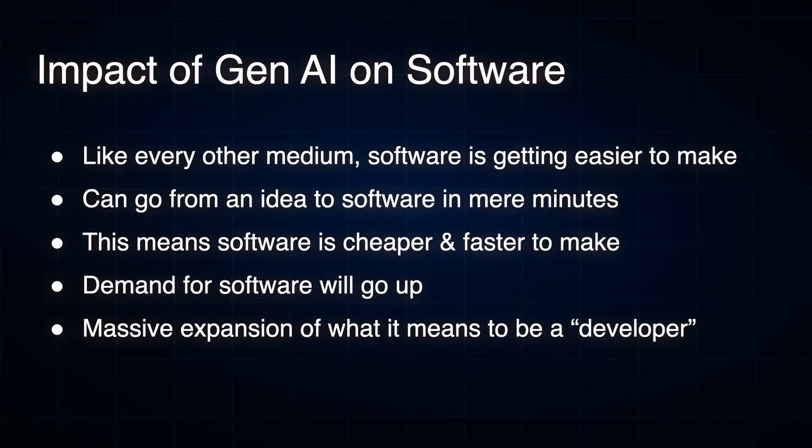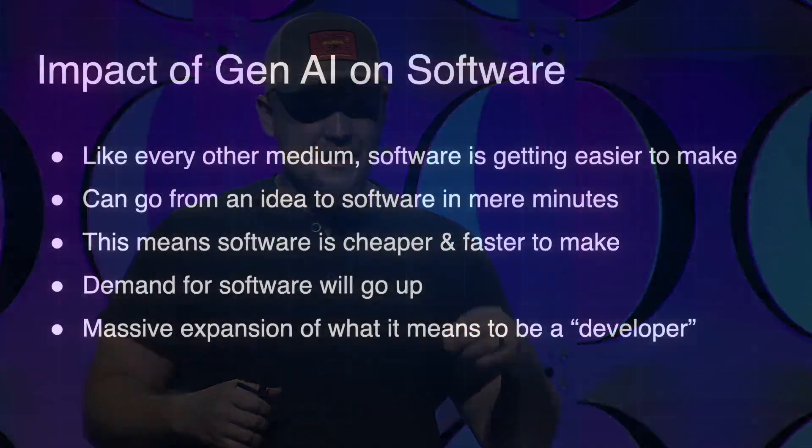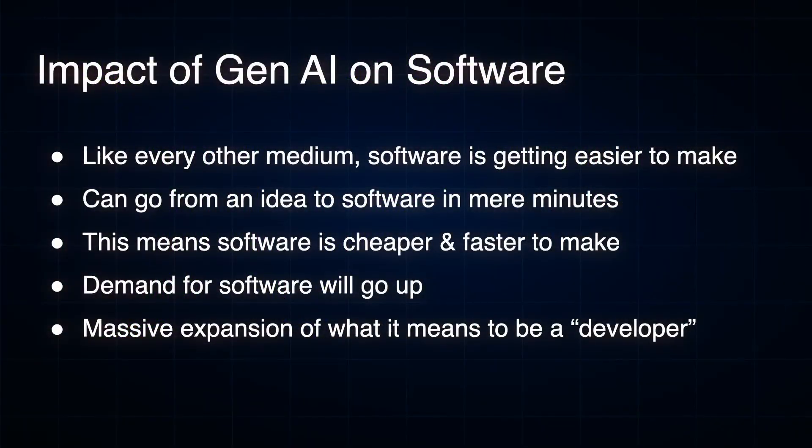Software is getting easier to make. Everyone is noticing that GPT-4 is exceptionally good at generating code from a very small amount of natural language instructions. You can go from an idea to some kind of prototype in mere minutes. That means it's cheaper and faster to make. As things get cheaper, typically demand goes up. And the demand for software is, so far, insatiable — people just want more of it.